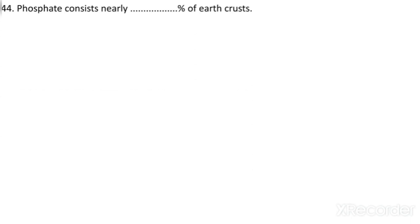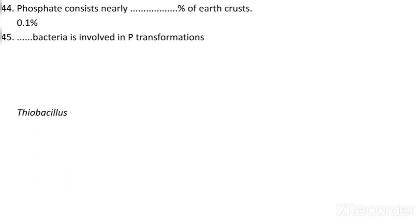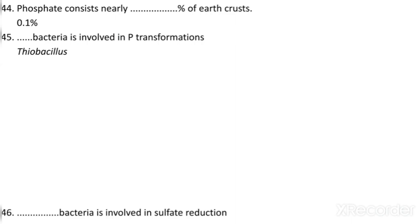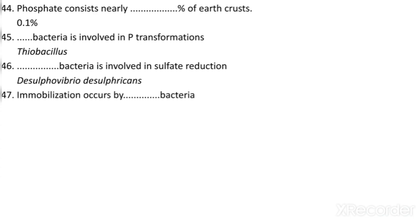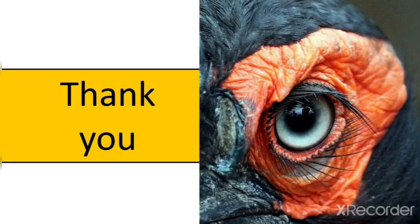Phosphate consists of nearly 0.1% of the earth's crust. Which bacteria is involved in phosphate transformations? Thiobacillus is involved. Which bacteria is involved in sulfate reduction? Desulfovibrio desulfuricans is involved in sulfate reduction. Sulfate immobilization also occurs by Desulfovibrio desulfuricans. These are some important questions on the carbon, nitrogen, phosphorus, and sulfur cycles. Thanks a lot.